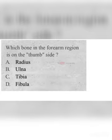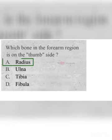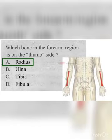Which bone in the forearm region is on the thumb side? A. Radius, B. Ulna, C. Tibia, D. Fibula. The correct answer is Radius. In the forearm region, the radius bone is on the thumb side.